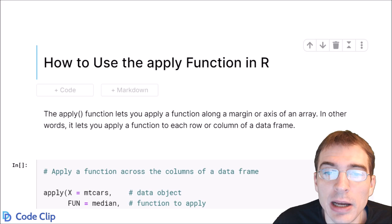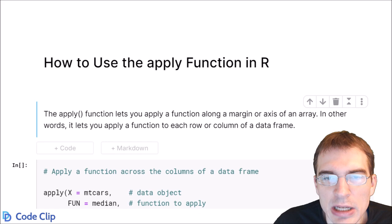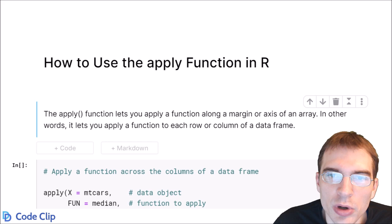In this video, we're going to learn how to use the apply function in R. Now, the apply function lets you execute another function across a given margin or axis of a multi-dimensional data object. So essentially, it lets you take a function and apply it to every single column or every single row of a data frame, depending on what you pass in as the argument for which margin you want to run the function on.